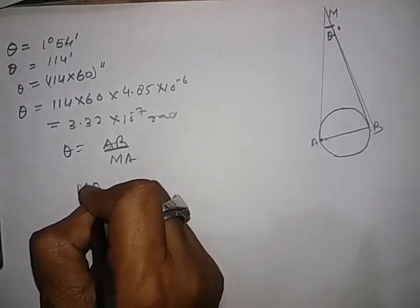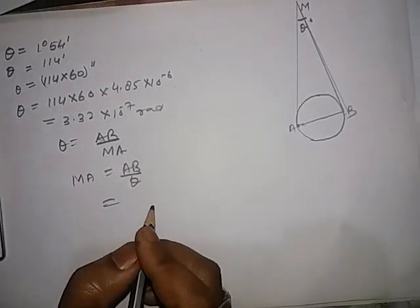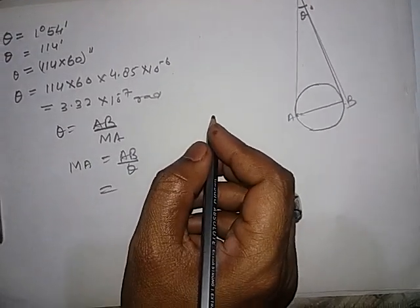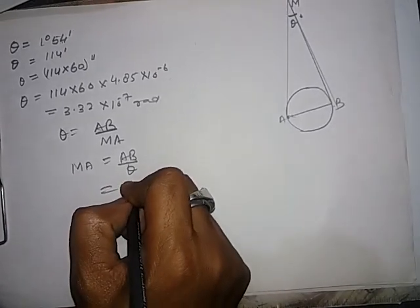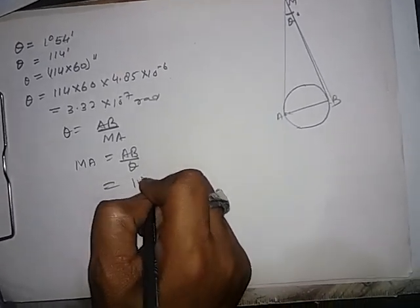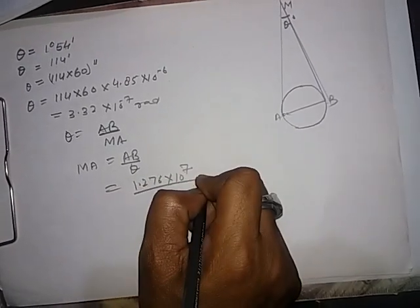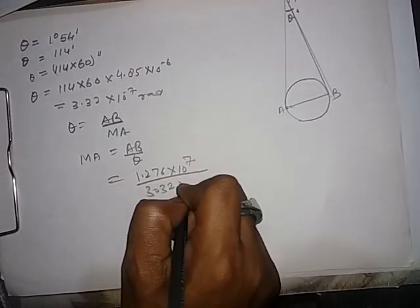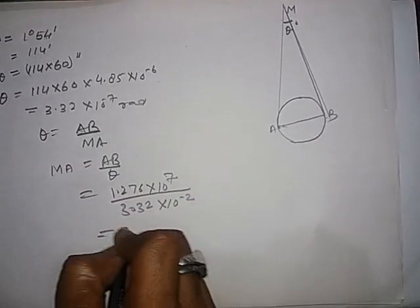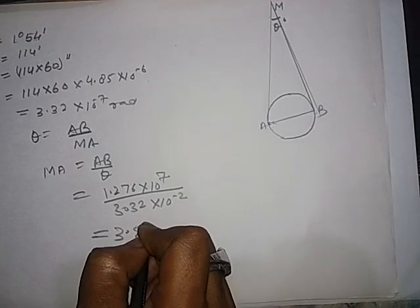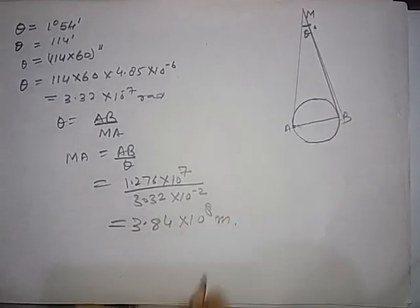MA equal to AB upon theta, where theta is in radians. Now, this equal to how much? 1.276 × 10^7 divided by 3.32 × 10^-2 equal to 3.84 × 10^8 meters. Correct.